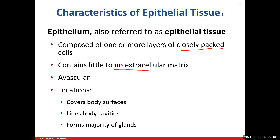One thing that can be included in the 'other stuff' is blood vessels. Epithelium has the interesting characteristic of being avascular — it does not have a blood supply. We're going to see epithelial tissue covering body surfaces; our skin's outer layer, the epidermis, is made up of epithelial tissue. We also learned about our serous membranes, which are also made up of epithelial tissue and line the body cavities inside. And the majority of the glands in our body are also going to be made up of epithelial tissue.